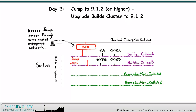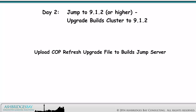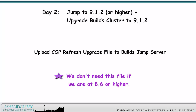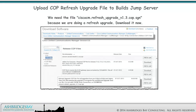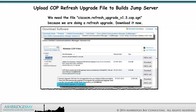We'll access the Builds Cluster using the BuildsJump server. The first thing we need to do is upload the COP refresh upgrade file to the BuildsJump server. We don't need this file if we are at 8.6 or higher. This patch is needed to prepare the CUCM for the change from RHEL 4 to 5. We need the file ciscocm.refresh_upgrade_v1.3.cop.sgn because we are doing a refresh upgrade.